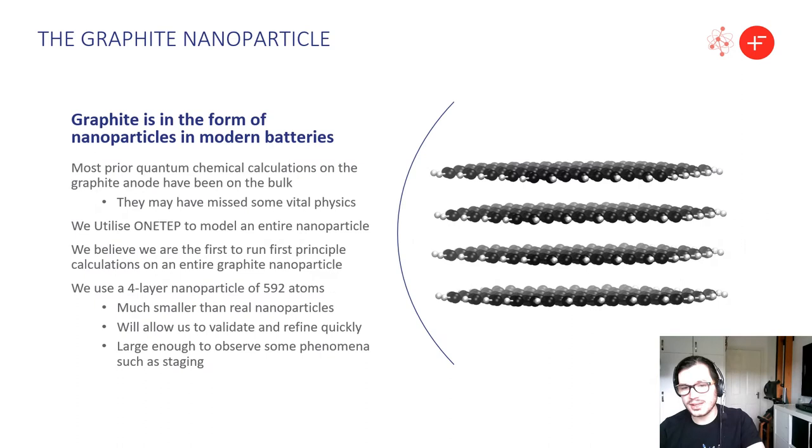Firstly I want to talk about the graphite nanoparticle itself. Most prior quantum mechanical calculations are focused on the bulk because it's much cheaper to do that. However, we posit there may be some vital physics that have been missed. So in order to check this out we utilize ONETEP to model an entire nanoparticle. We believe we're the first to run quantum mechanical simulations on an entire graphite nanoparticle let alone intercalate it.